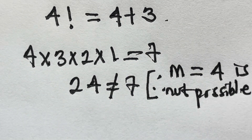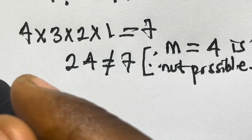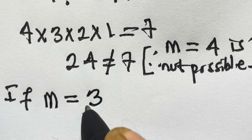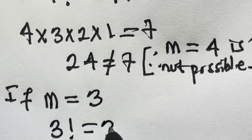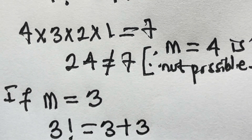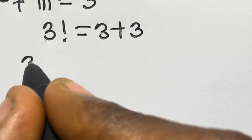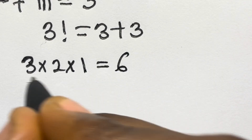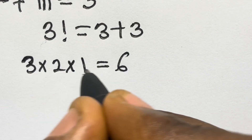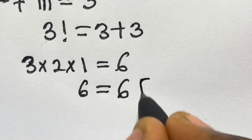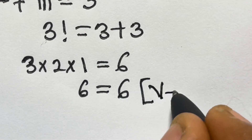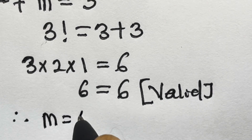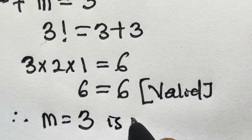Let's test m equals 3: 3 factorial equals 3 plus 3, that is 6. And 3 factorial is 3 times 2 times 1, which is also 6. Since 6 equals 6, m equals 3 is valid.